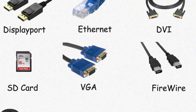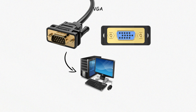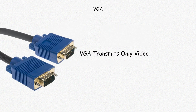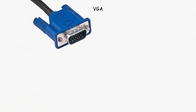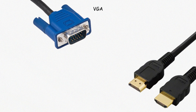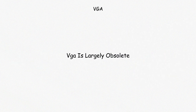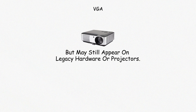VGA ports are analog video connectors, once standard on older computers and monitors. VGA stands for Video Graphics Array. It has 15 pins arranged in three rows and is typically blue. VGA transmits only video, not audio, and supports resolutions up to 1080p, but lacks sharpness compared to digital ports like HDMI or DisplayPort. Signal quality can degrade over long cables or with interference. VGA is largely obsolete but may still appear on legacy hardware or projectors.